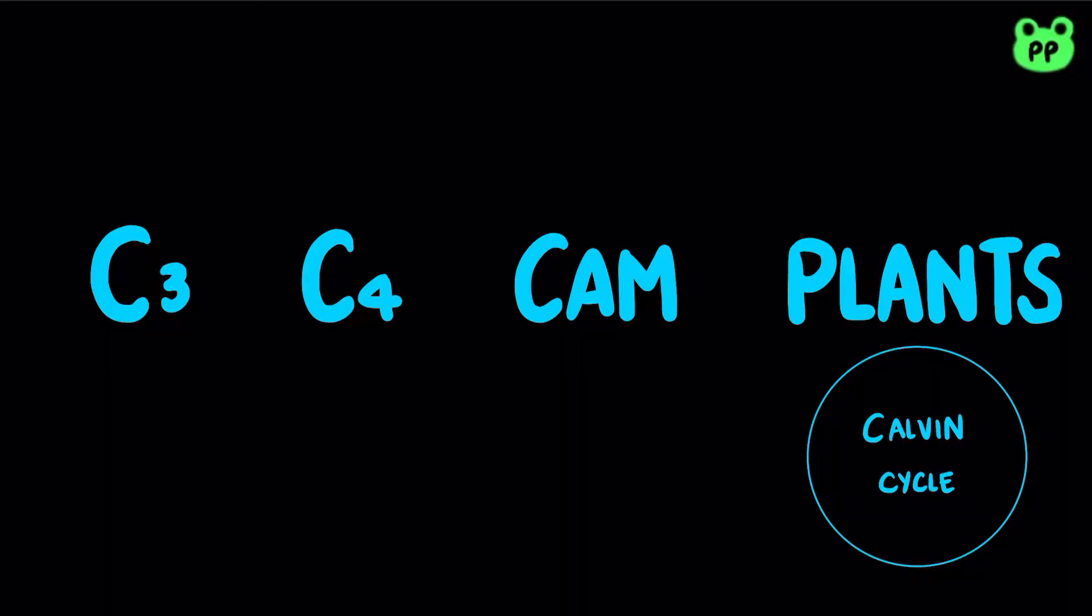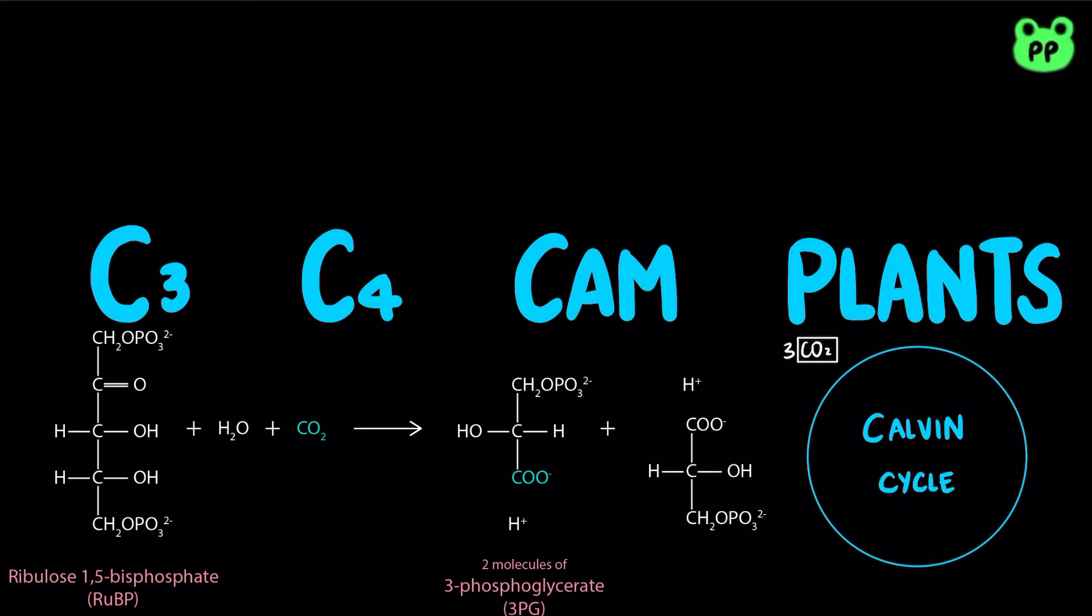The Calvin Cycle occurs in three stages. The first stage is carbon fixation. The enzyme ribulose-1,5-bisphosphate carboxylase oxygenase, abbreviated as RUBISCO, catalyzes the covalent attachment of carbon dioxide to the 5-carbon ribulose-1,5-bisphosphate, abbreviated as RuBP, followed by cleavage of the unstable 6-carbon intermediate to form the 3-carbon 3-phosphoglycerate, abbreviated as 3PG.